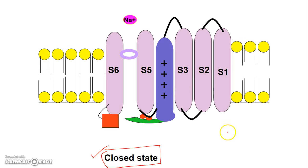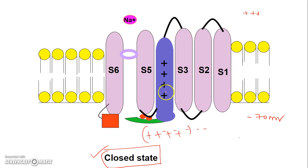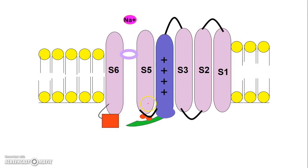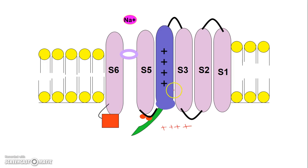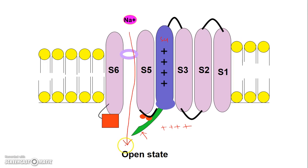Normally the membrane is at minus 70 millivolts — negative inside, positive outside. Whenever there is a depolarization, positive charges increase inside, and these push the positively charged S4 segment outward. During this process, the activation gate opens, sodium ions are able to pass through the pore, and the voltage-gated channel enters the open state.